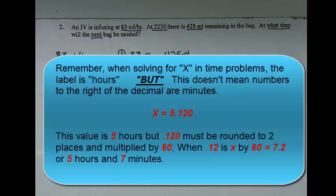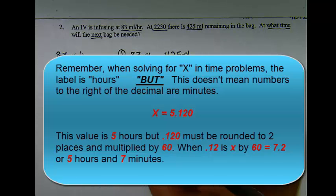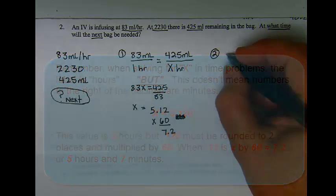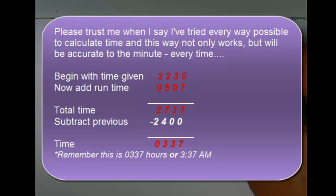However, the 0.12 does not represent 12 minutes, but multiplied by 60 equals 7.2 minutes. If the total time is added to the time the IV was checked, I can then combine the time to figure out when the next bag will be needed.